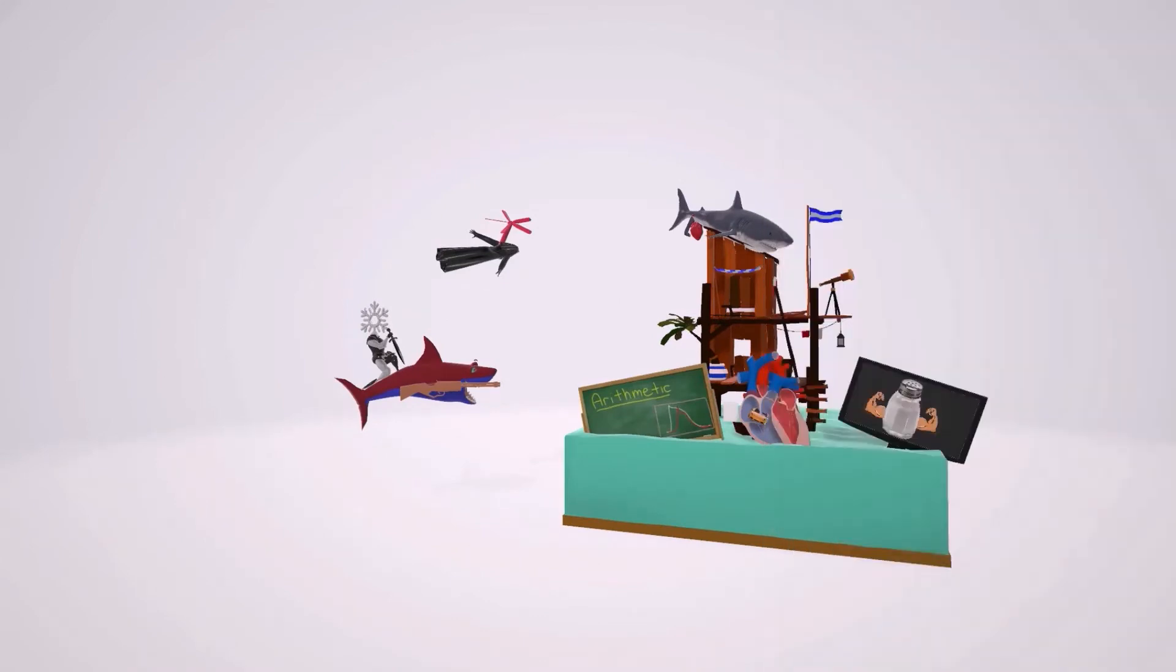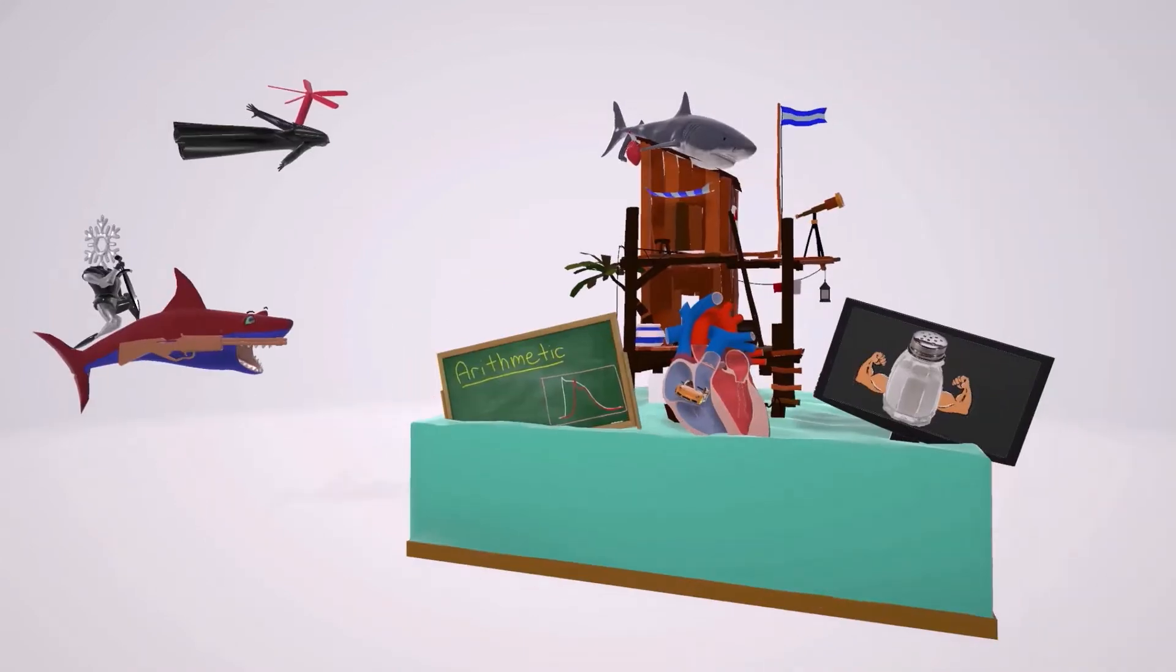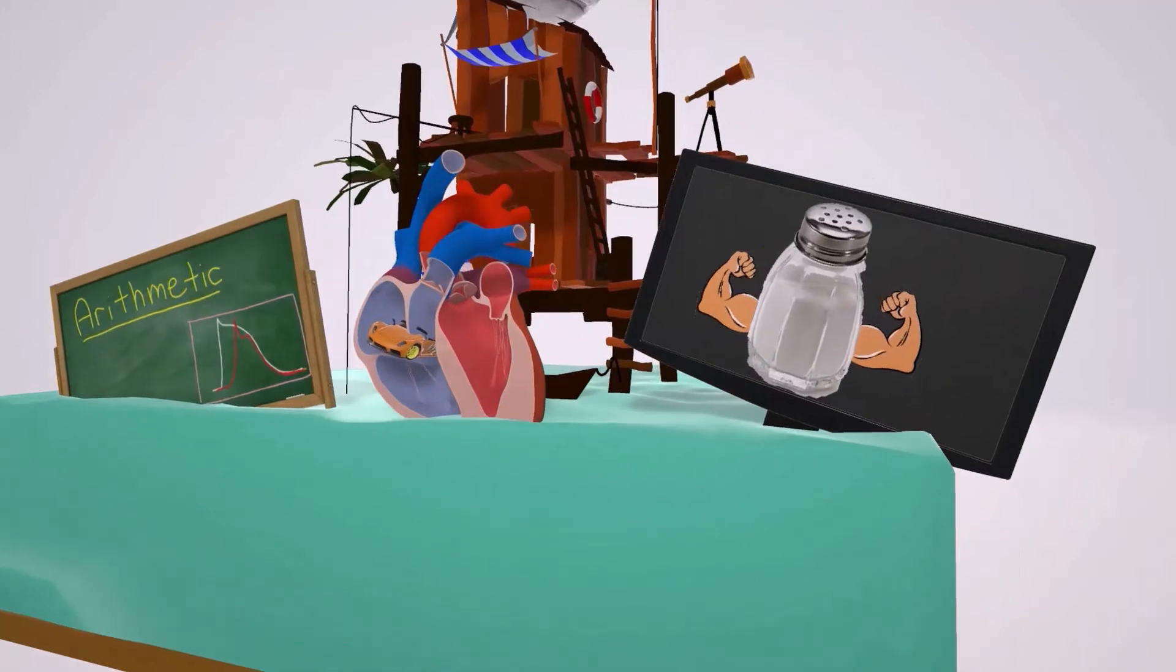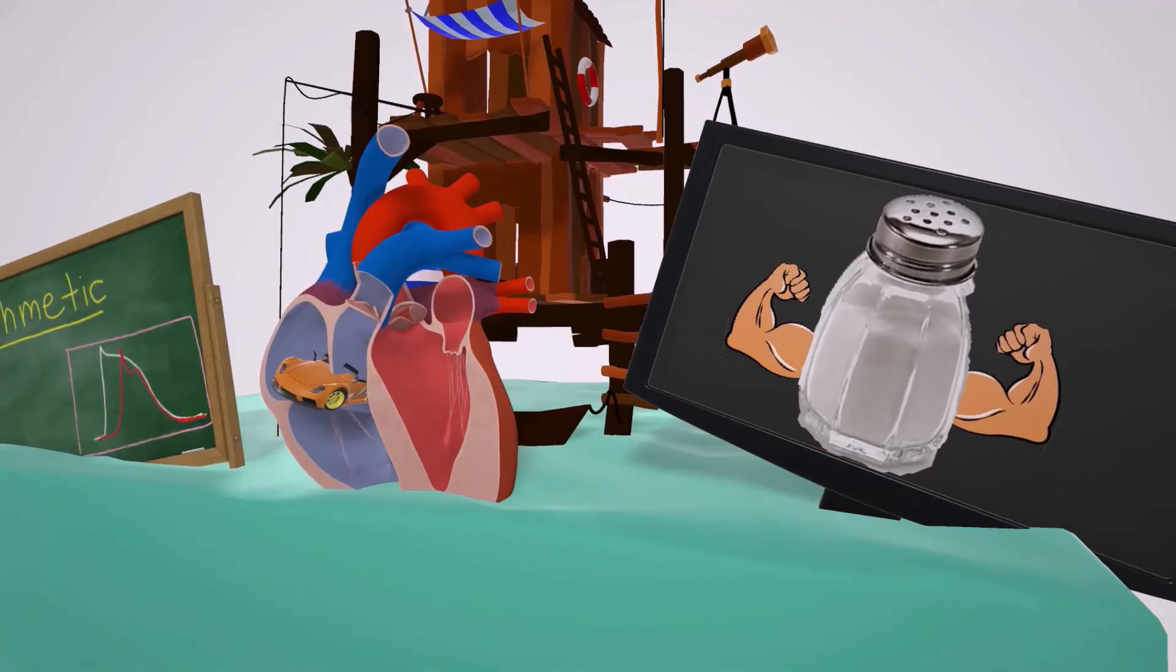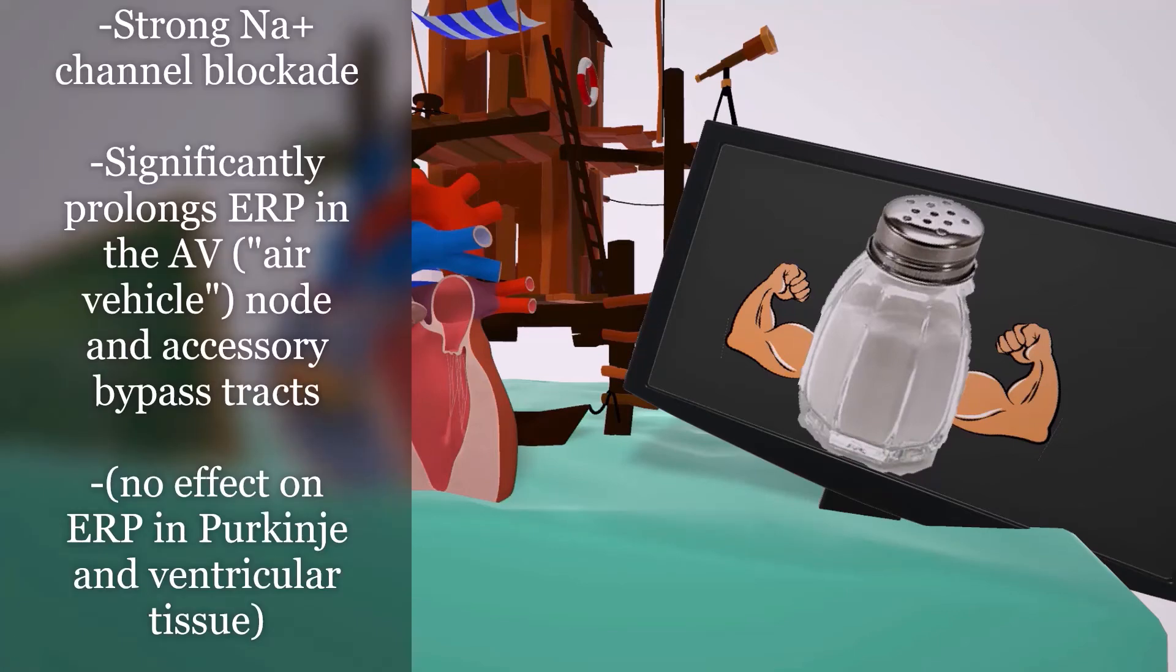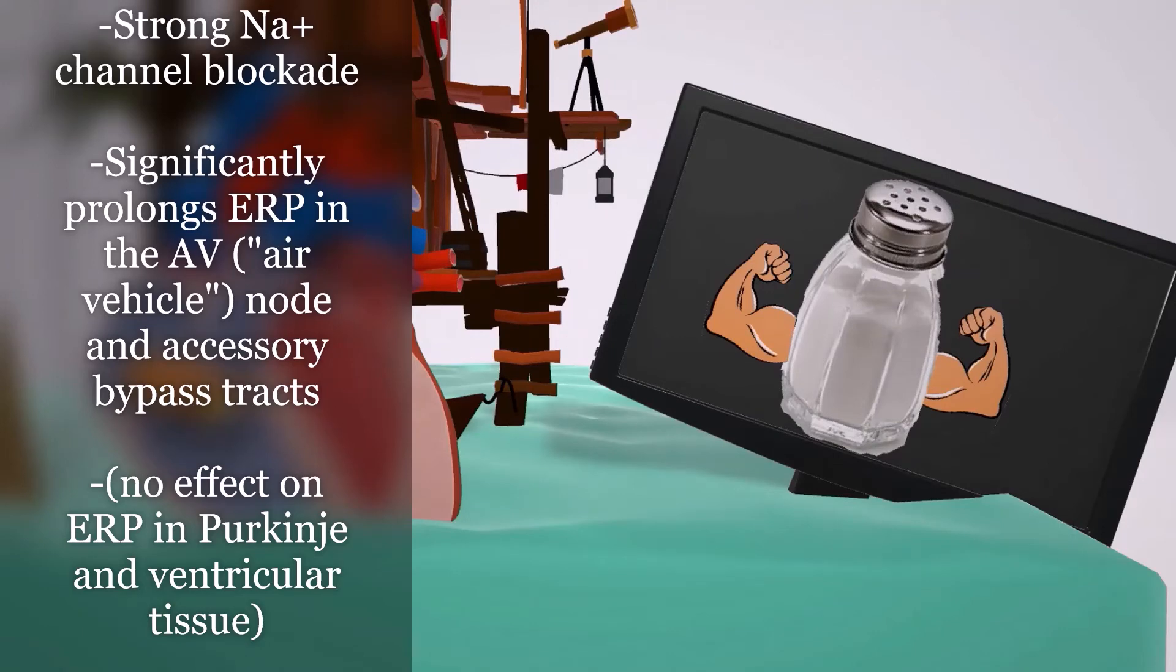Okay, so how do class 1C anti-arrhythmics work? Let's take a look at this TV. The classroom for some reason always has this TV on with the sodium channel on. They love the sodium channel. And over here at the C on the sodium channel episode today, the salt is very strong and it's being exploded, it's being blocked. This helps us remember strong sodium channel blockade.